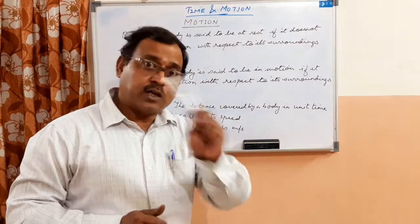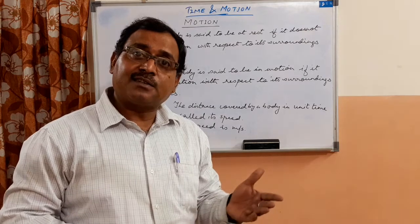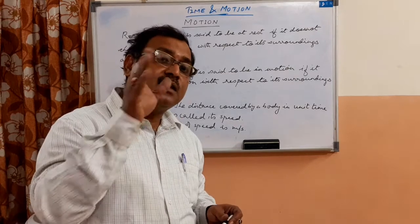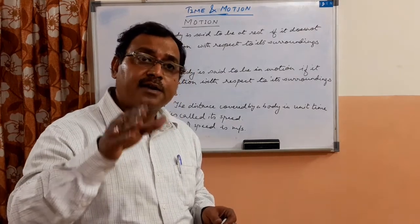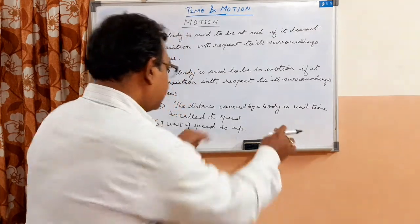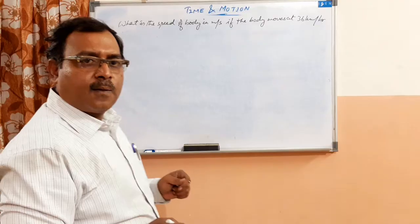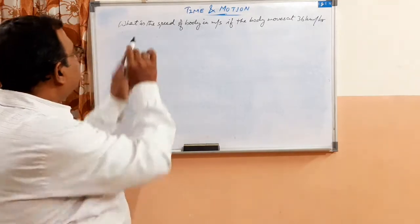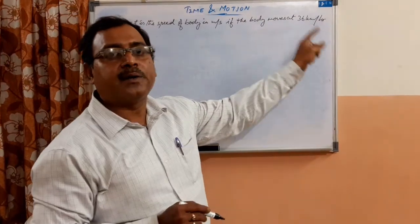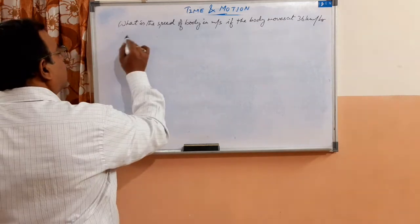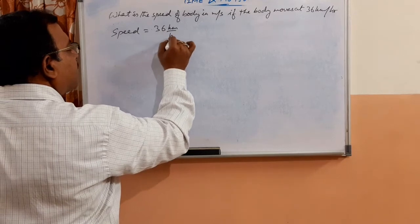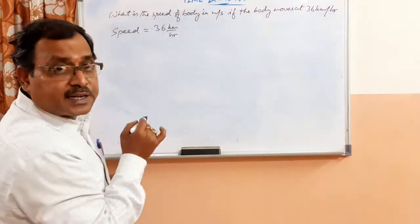Now the SI unit is meter per second — that is the standard unit, not kilometer per hour. But generally speed is given in kilometer per hour, so you must know how to convert speed given in kilometer per hour into meter per second. Let me give you one example: what is the speed of a body in meter per second if the body moves at 36 kilometer per hour?